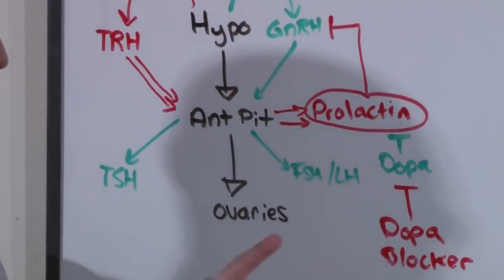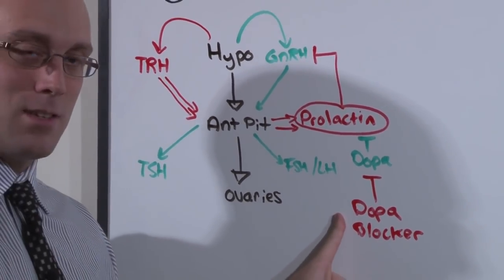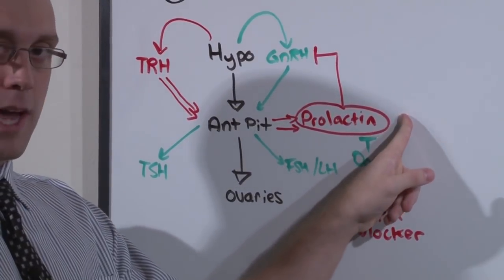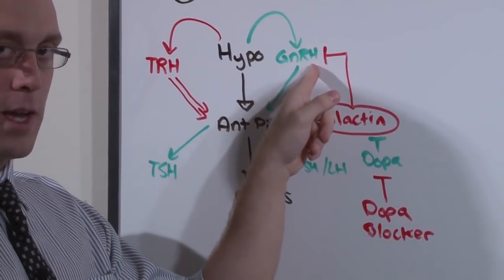Basically is, if you put someone on a dopamine antagonist, you increase the levels of prolactin, increase the levels of prolactin, shut off the axis.